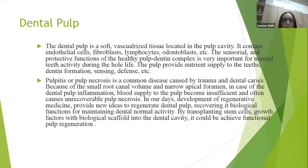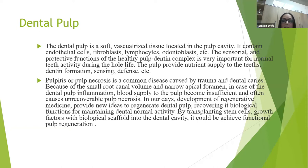Pulpitis or pulp necrosis is a common disease caused by trauma and dental caries. Because of a small root canal volume and narrow apical foramen, in case of bad dental pulp inflammation, blood supply to the pulp becomes insufficient and often causes unrecoverable pulp necrosis. In our days, development of regenerative medicine provides new ideas to regenerate dental pulp, recovering its biological function for maintaining normal dental activity.